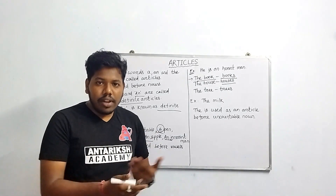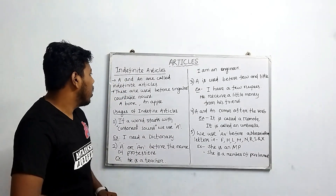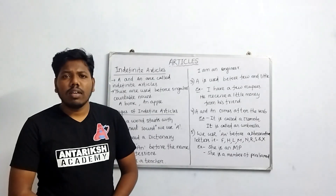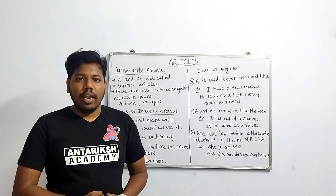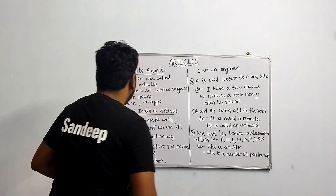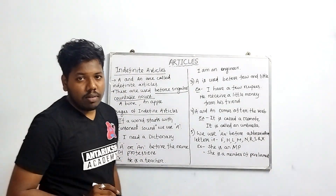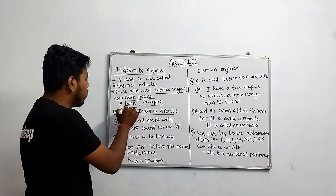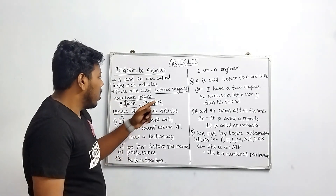Now we will read about indefinite articles in detail — what they are, their usages, and how both 'a' and 'an' are used. First, note the definition: 'a' and 'an' are called indefinite articles. Remember, these are used before singular countable nouns. For example: a book, an apple.